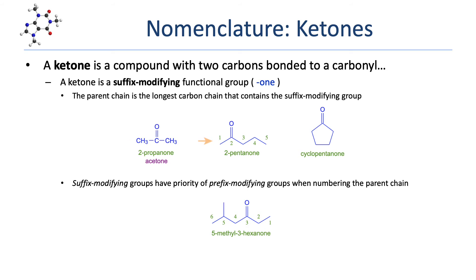In the next example, we can see that the ketone is part of a five-carbon chain, making this a pentanone. We number the carbons of the parent chain starting from the end that is closer to that suffix-modifying group, which means going left to right in this case. That places the carbonyl on the second carbon, so here we have 2-pentanone.